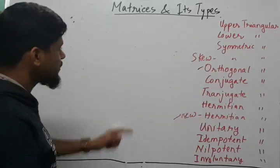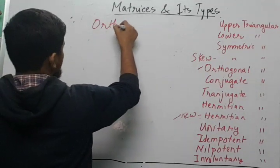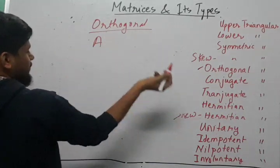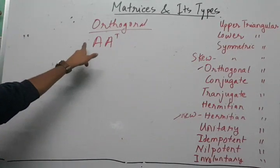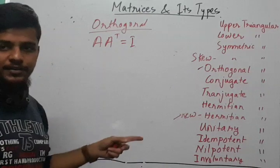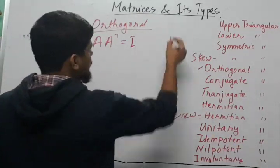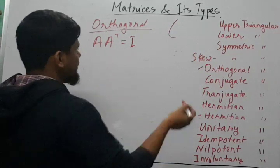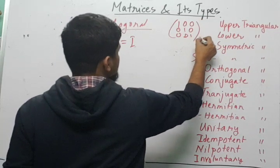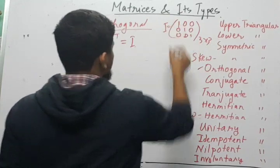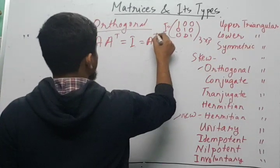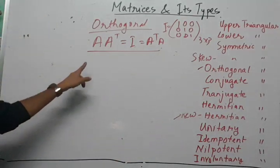An orthogonal matrix is very easy to deal with. Basically, if A is a matrix and A transpose is its transpose, then the product A times A transpose will be equal to I, the identity matrix. For a 3×3 identity matrix, it has 1s on the diagonal and 0s elsewhere. We can also write A transpose times A equals I. This is the condition associated with the orthogonal matrix.